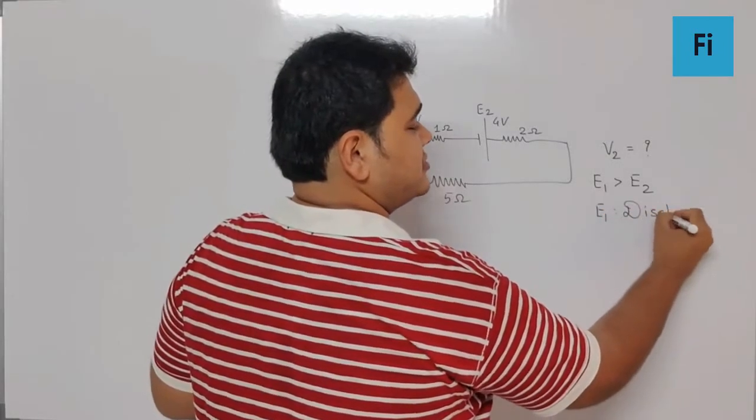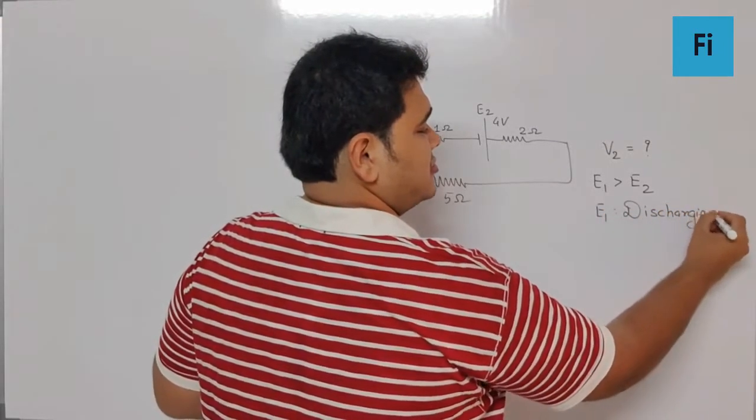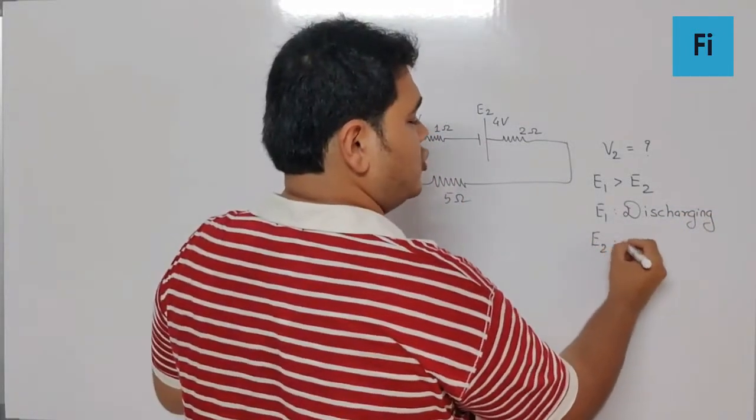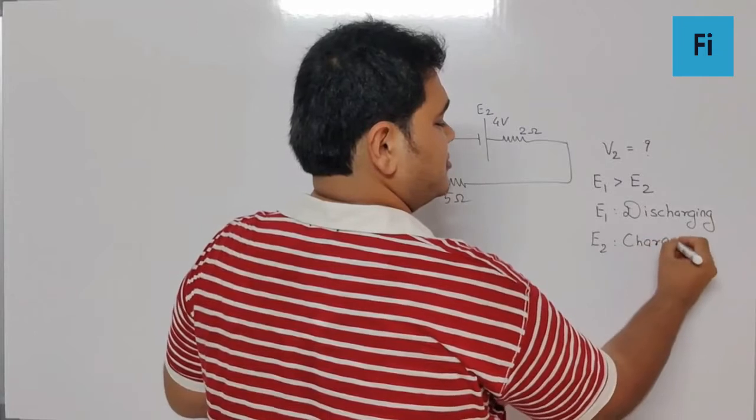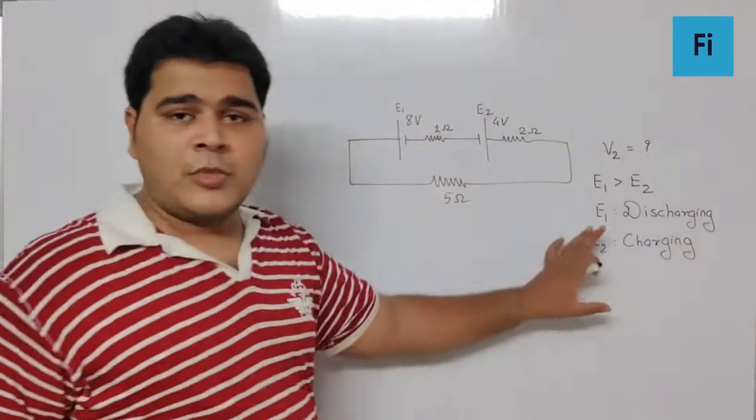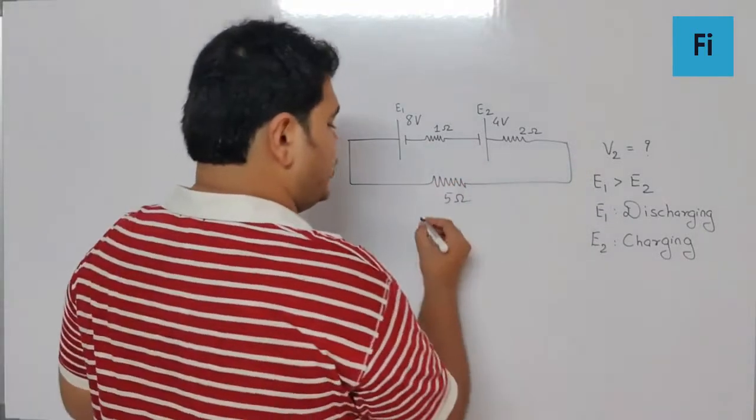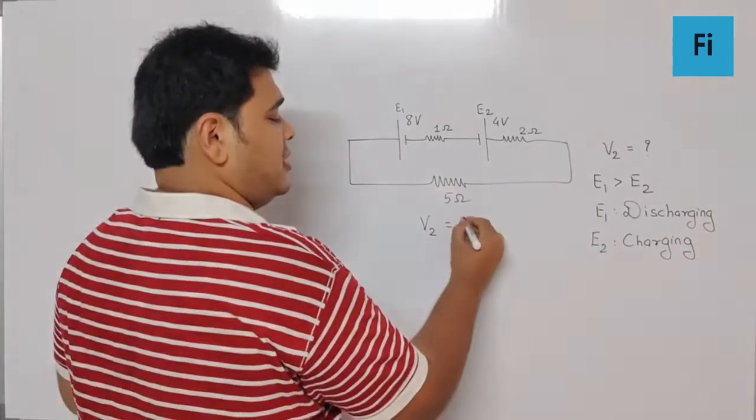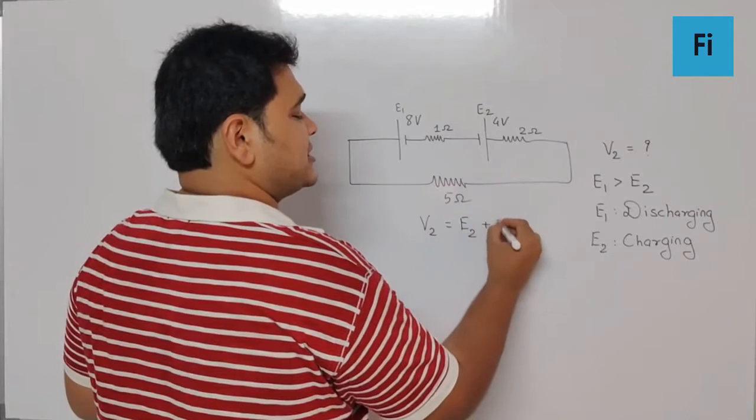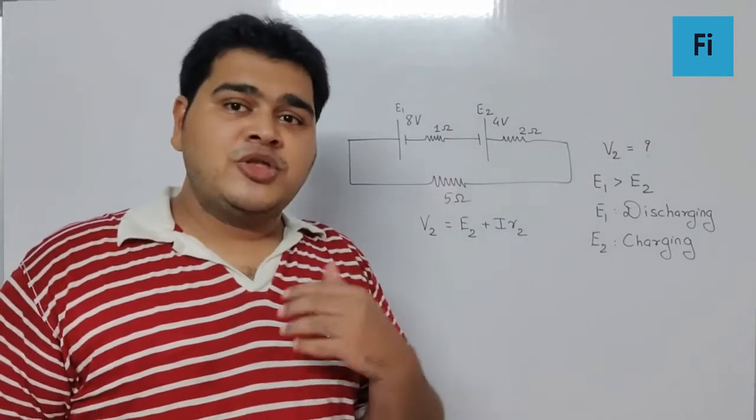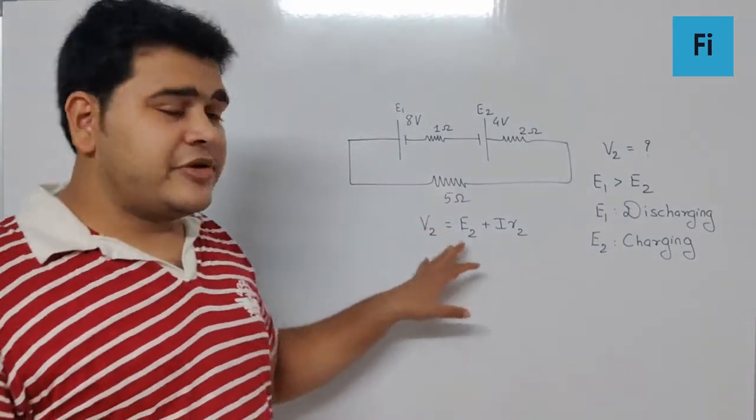And that means if you want to find V2, it is going to be E2 plus IR. Yes, that is the formula for charging. Generally the formula is V is equal to E minus IR because generally V is less than E, because generally a cell is used for discharging.